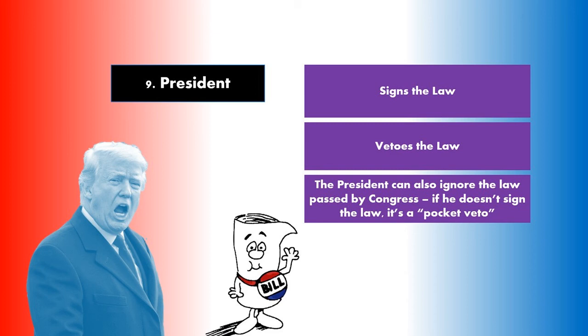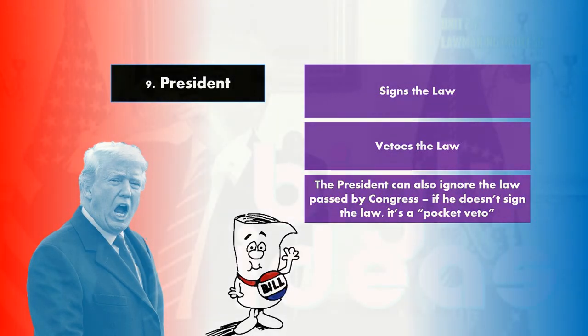So the president has three options, and two of those three options result in our bill dying. But with one of those options, the president signs the law and we have turned our bill into a law and we can all celebrate.